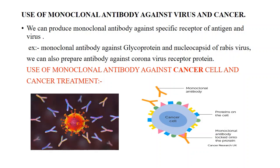Now, regarding the use of monoclonal antibodies against viruses and cancer: we can produce a particular type of monoclonal antibody against the receptor of an antigen or virus. For example, monoclonal antibody against the glycoprotein and nucleocapsid of rabies virus has already been produced. We can also prepare antibody against the coronavirus receptor protein — the spike protein present on the surface of coronavirus — and we can develop monoclonal antibody against the hemagglutinin receptor. Israel has already reported developing a monoclonal antibody against coronavirus.